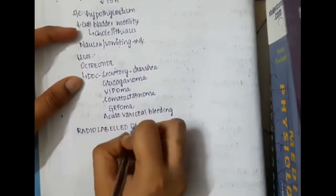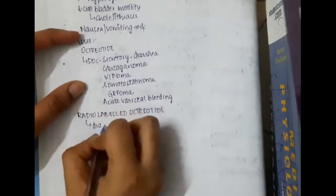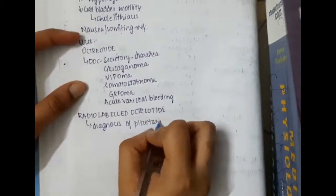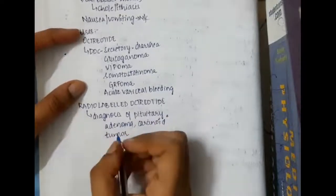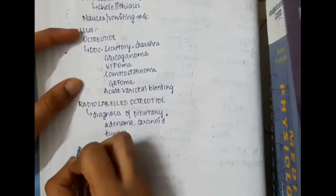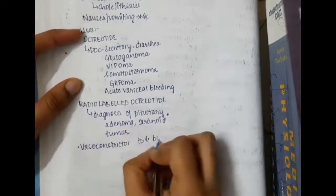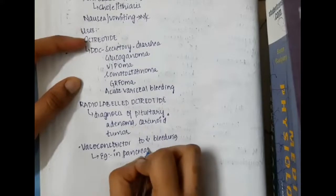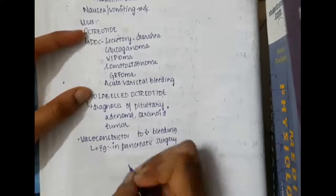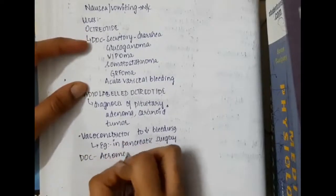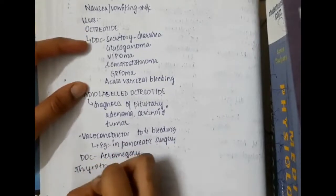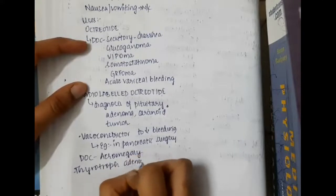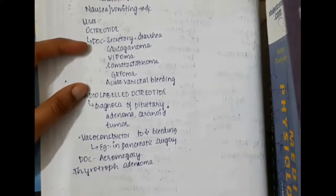Radiolabelled octreotide is used in the diagnosis of pituitary adenoma and carcinoid tumour. Octreotide also acts as a vasoconstrictor to decrease bleeding, especially in pancreatic surgery. It is also the drug of choice in acromegaly and is used in thyrotroph adenoma.